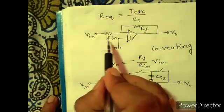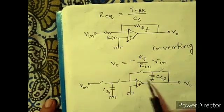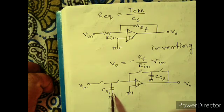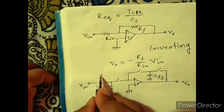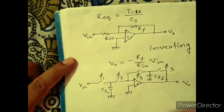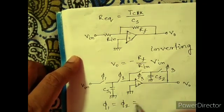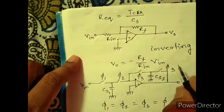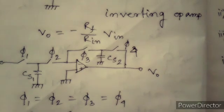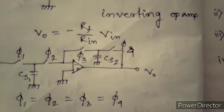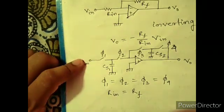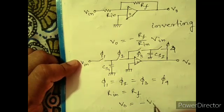We can represent R_in with switched capacitor and RF with switched capacitor. From there we can find out RF and R_in. If the clock frequencies phi 1 equals phi 2 equals phi 3 equals phi 4, and CS1 equals CS2, then R_in equals R_reference, so V_out will be minus V_in.